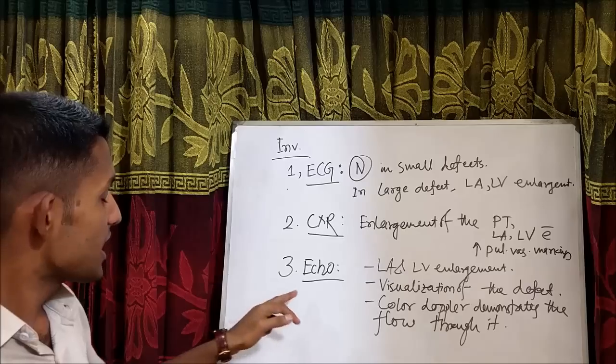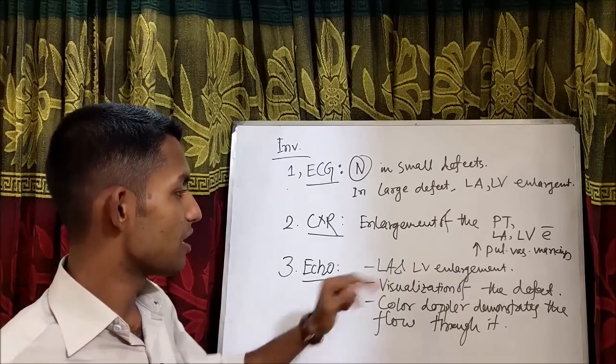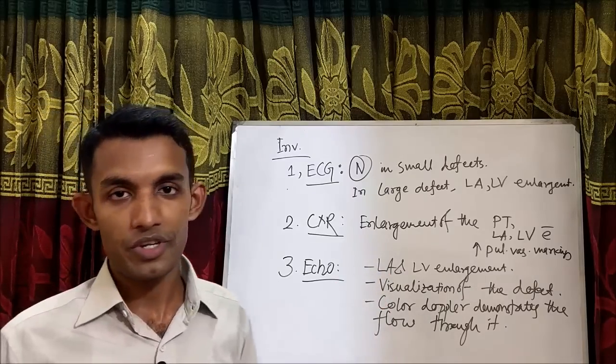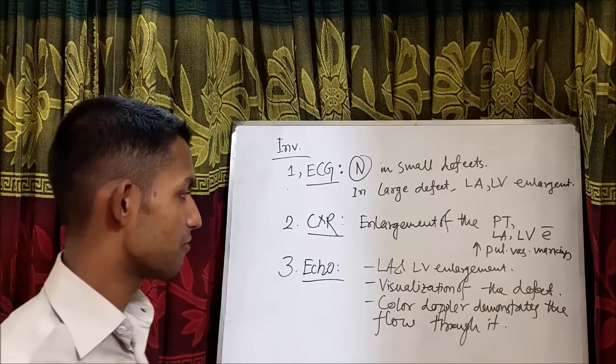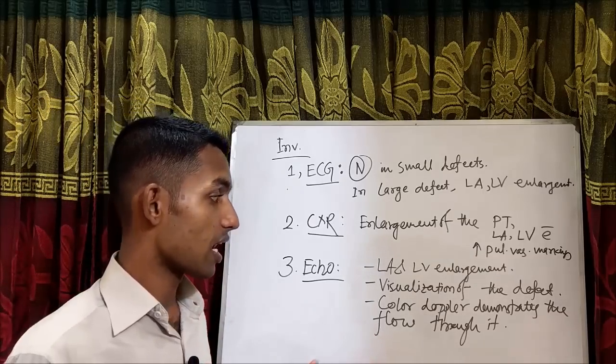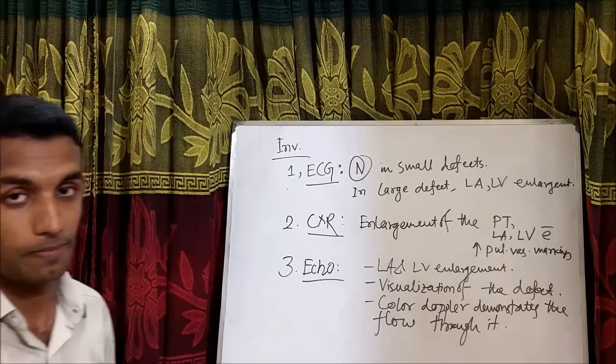In case of echocardiogram, we will see left atrium and left ventricle dilated, visualization of the defect, and color Doppler demonstrates the flow through it.